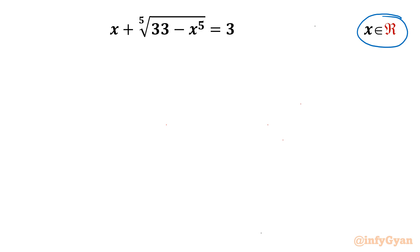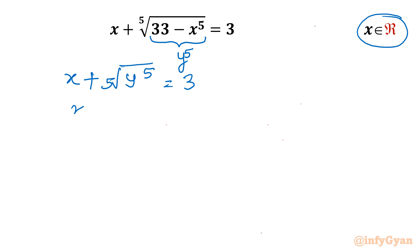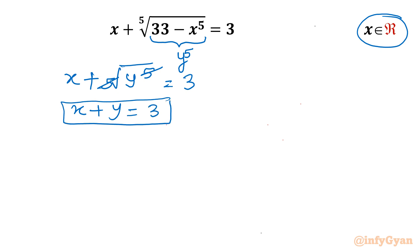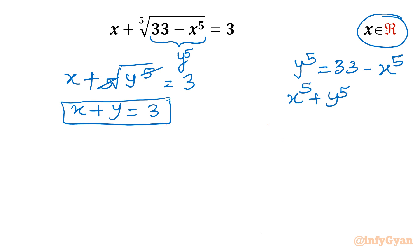Let's get started by considering our substitution: the radicand equal to y^5. So if y^5, then the fifth root of y^5 gives x plus y equal to 3. The second equation comes from the substitution: y^5 equals 33 minus x^5, or x^5 plus y^5 equals 33.